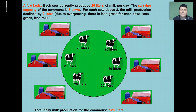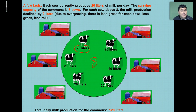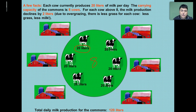Let's assume a few facts. Each cow is producing 20 liters of milk per day. The carrying capacity for this pasture is going to be eight cows. For each cow over eight, the milk production is going to decline by two liters. This is a result of overgrazing — if there's less grass for each cow, then there's going to be less milk produced.